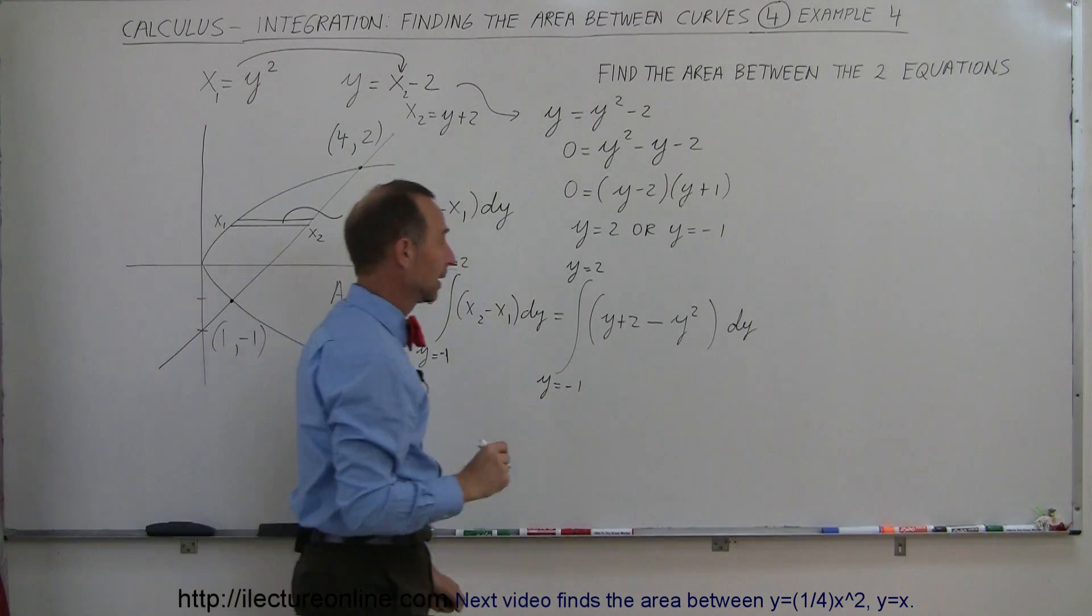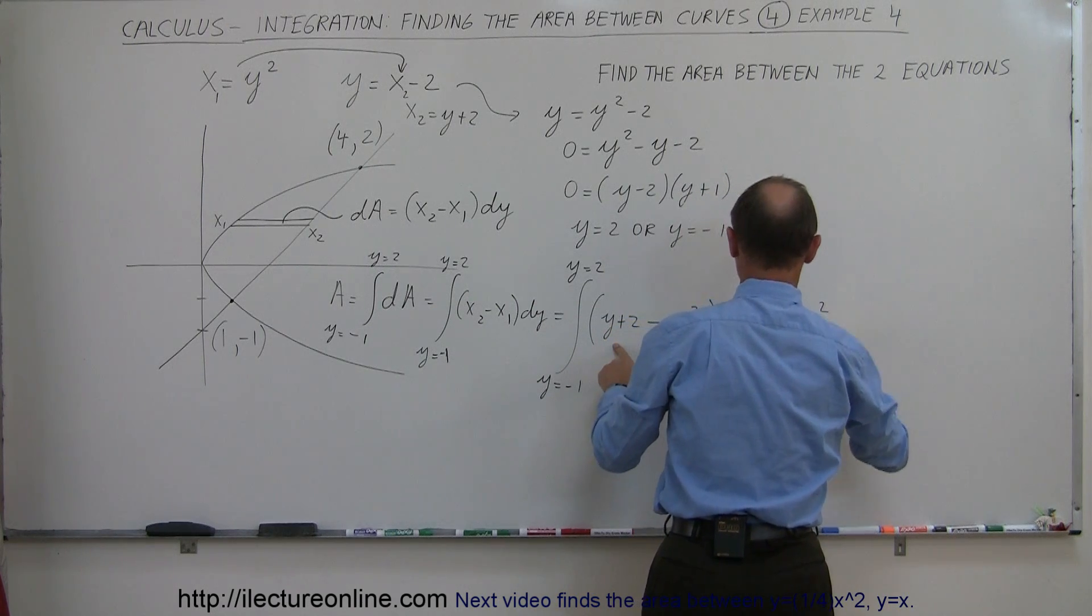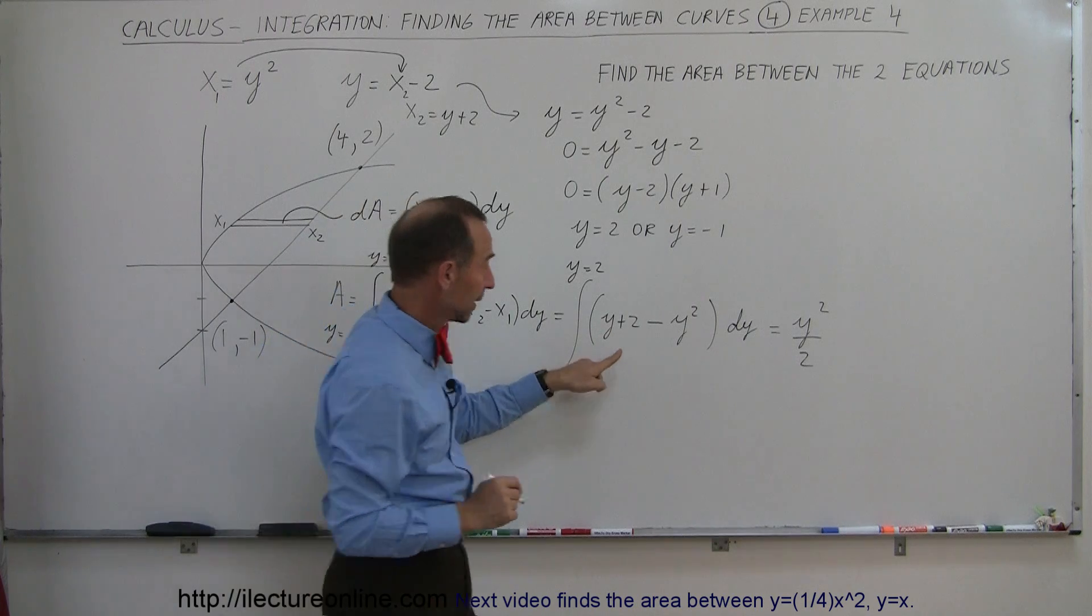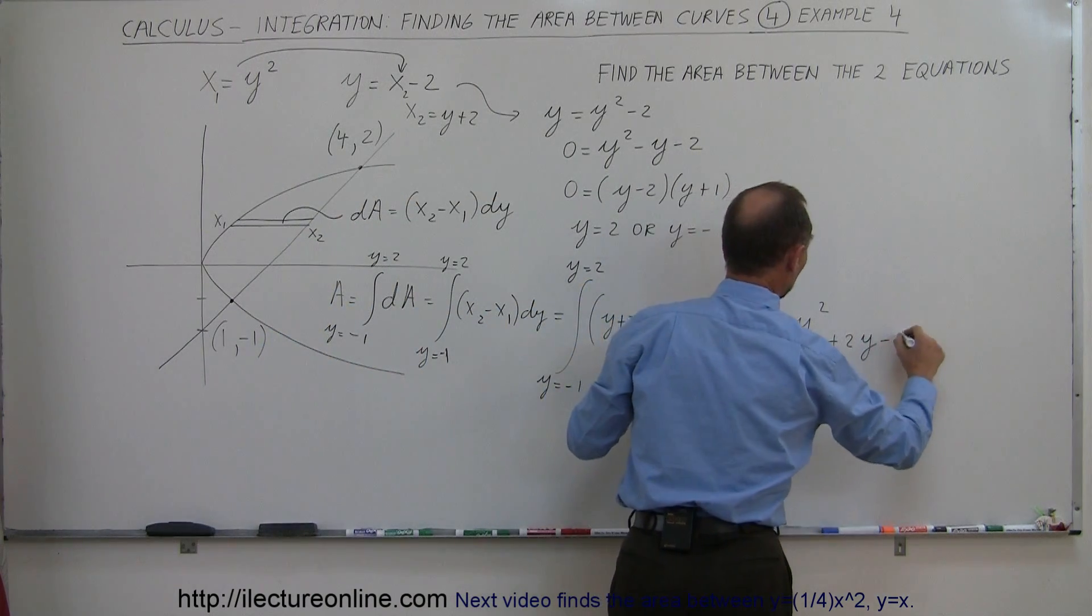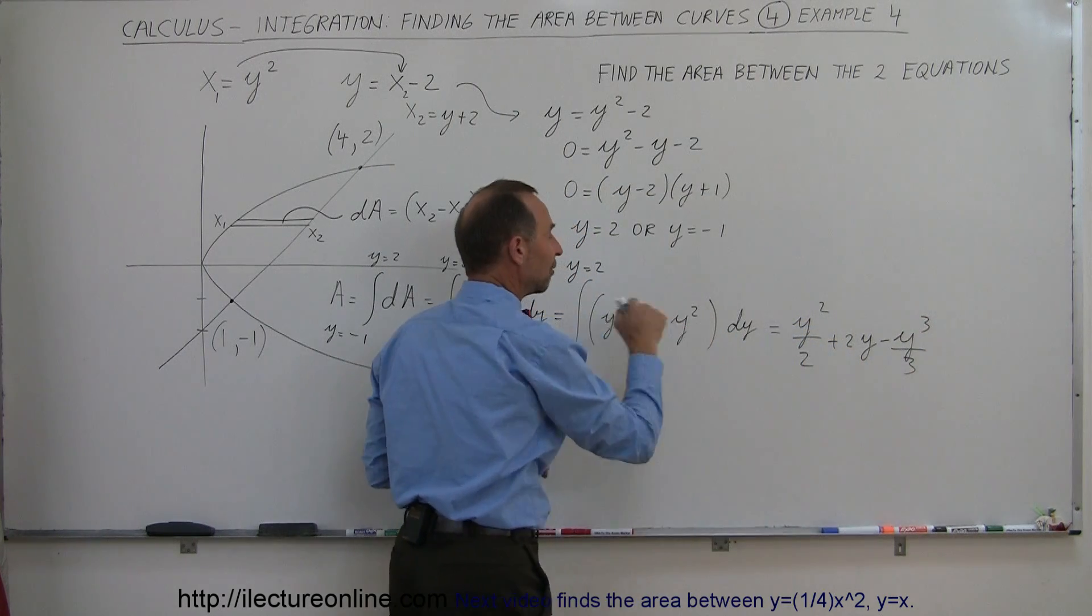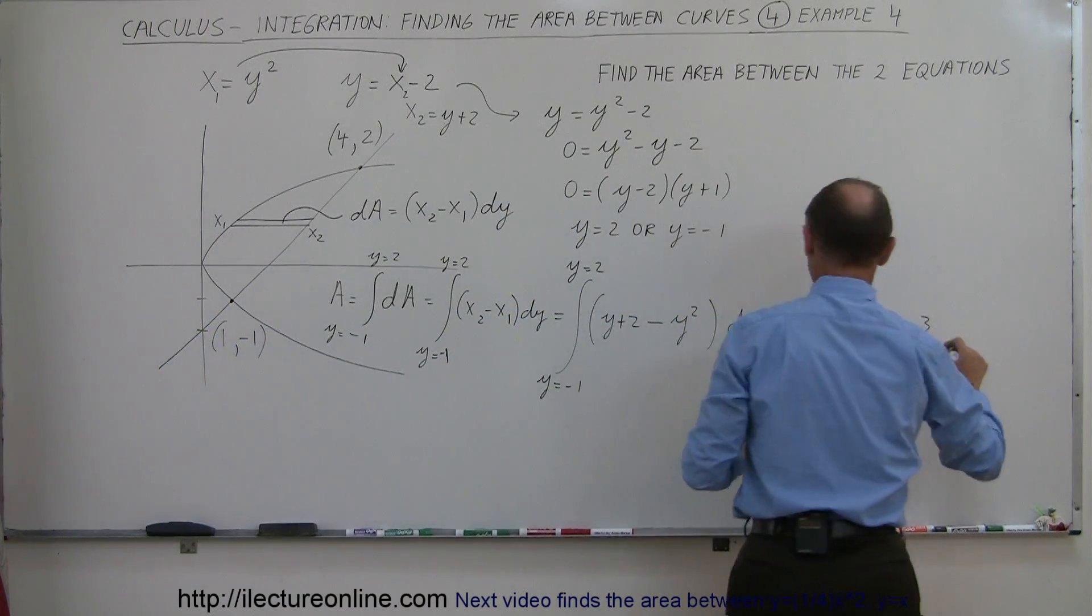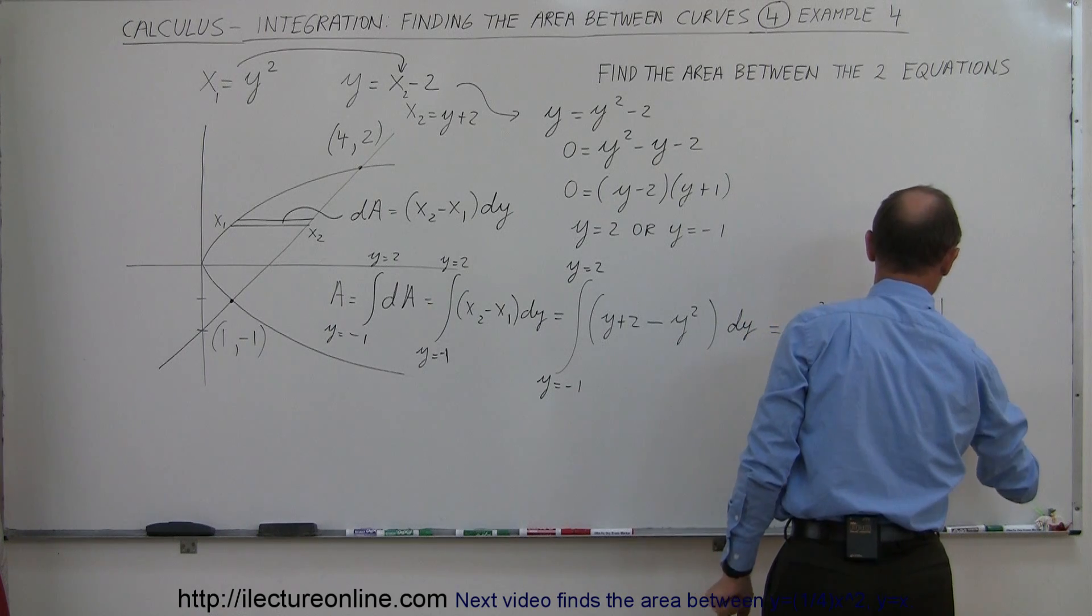If I integrate that, I get this is equal to, that would be y squared divided by 2. So I add 1 to the exponent, divide by the new exponent. Then I get plus 2y and minus y cubed divided by 3. Again, I add 1 to the exponent, divide by the new exponent. And then I have to evaluate that from y equals negative 1 to y equals 2.